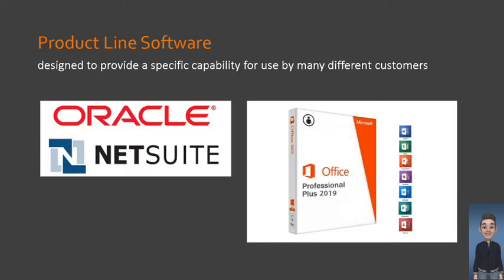Next, we have product line software. Product line software is designed to provide a specific capability for use by many different customers — like applications but common to many, if not all, users doing the same functionality. Notice that different applications are built on top of one another to support varying functionalities of the user. A good example is office applications.